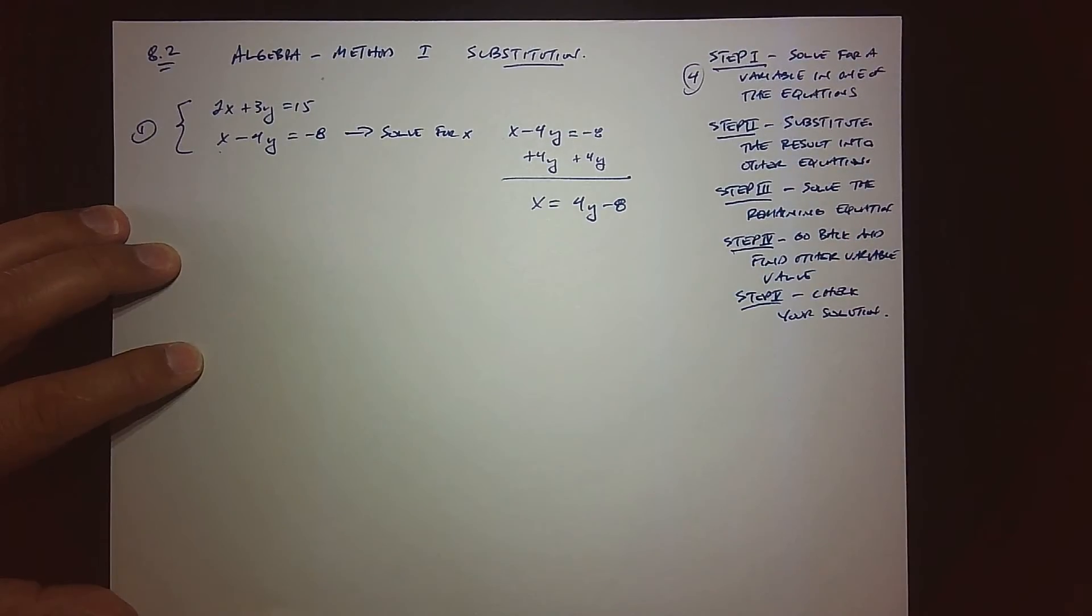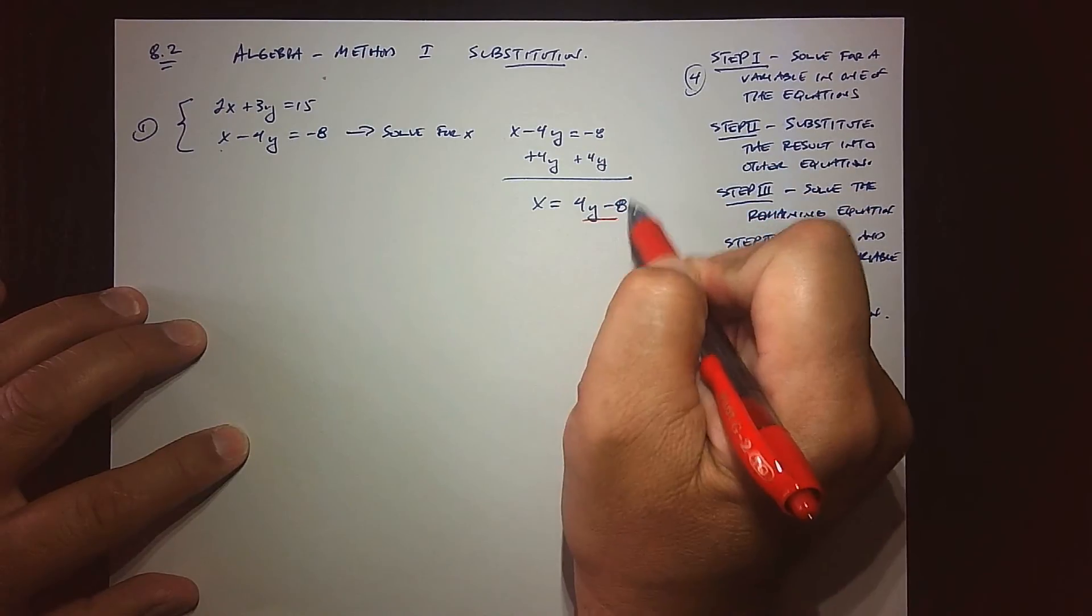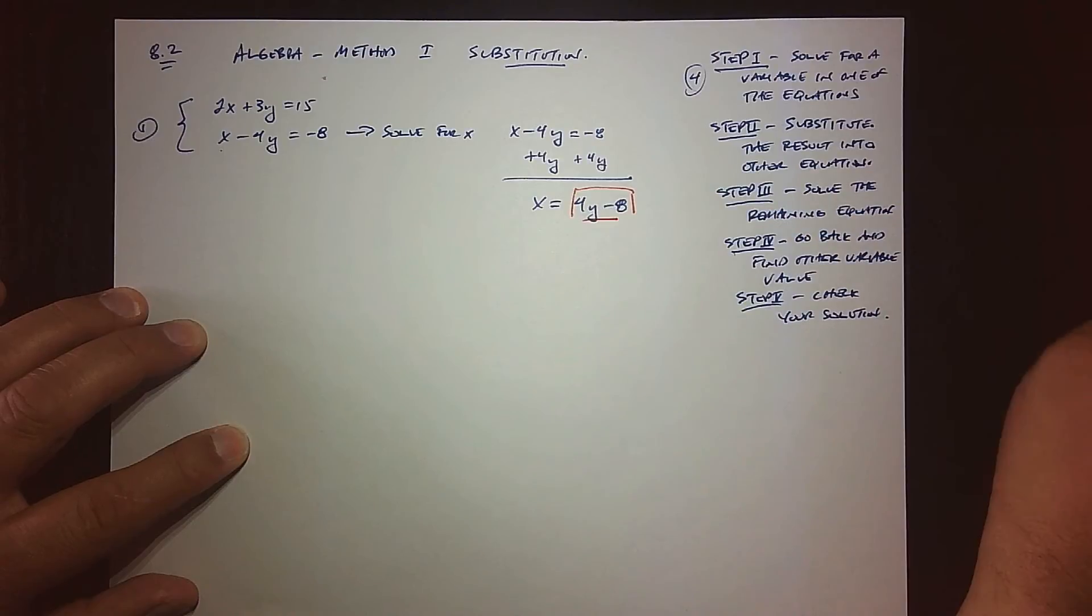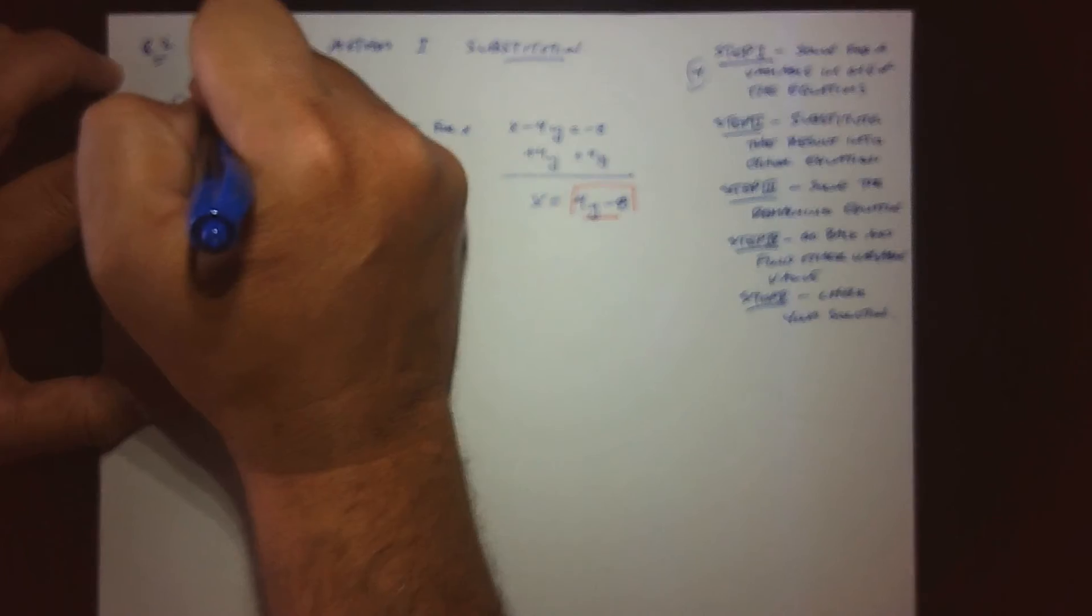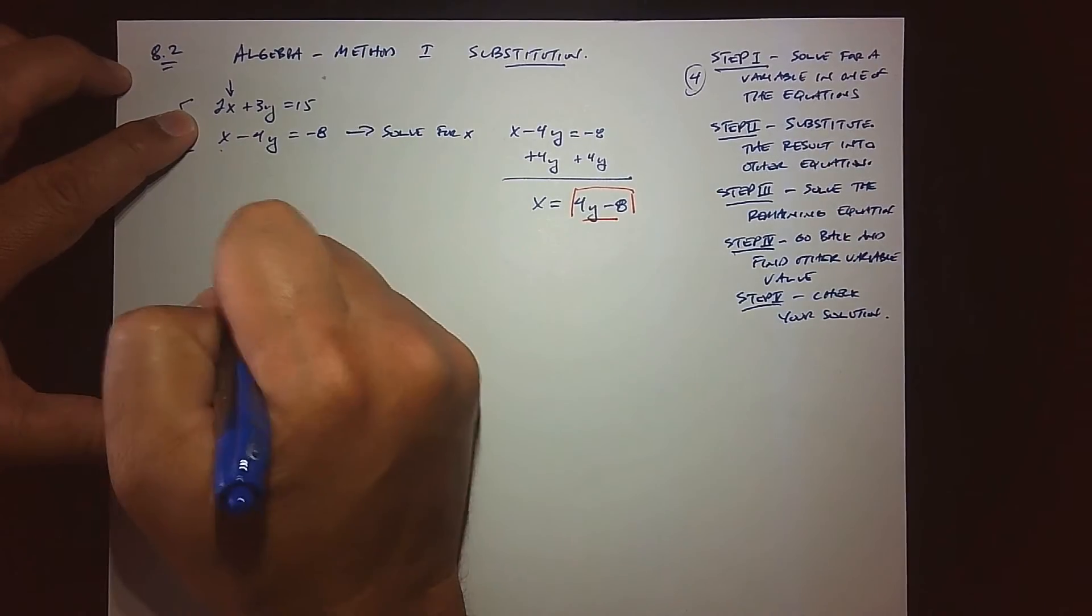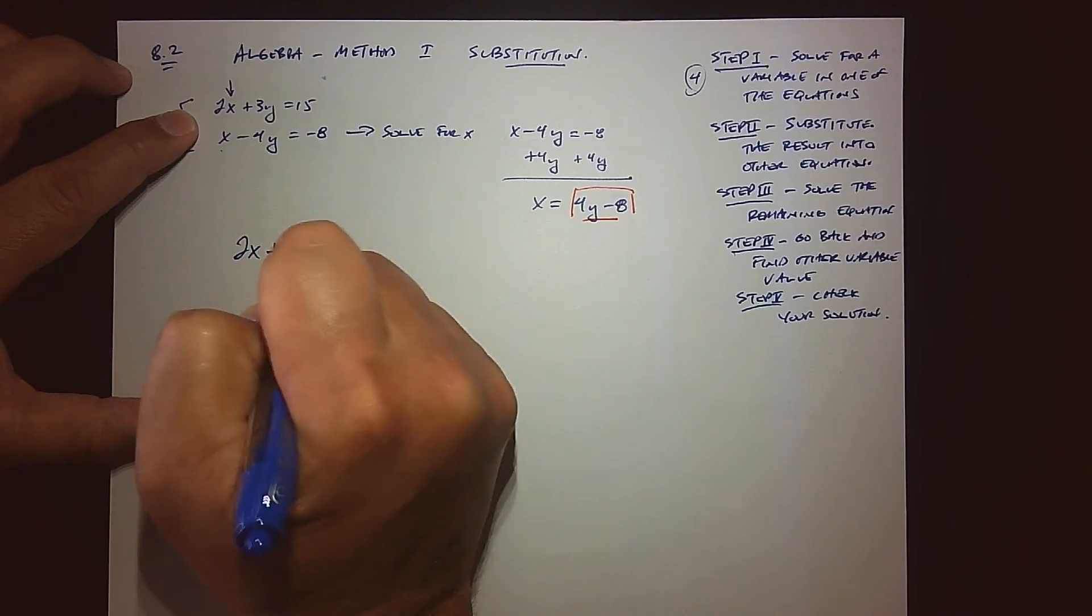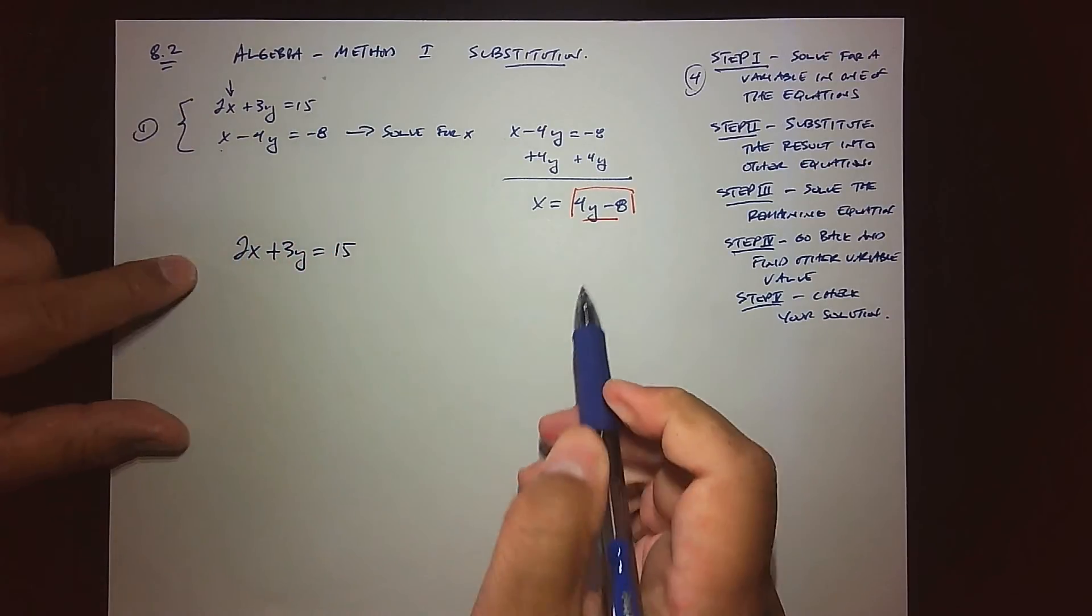I'm claiming that x is equal to 4y minus 8. So I'm going to take what I know x to be and I'm going to come to the other equation, right there. I'm going to come to this equation—don't use the same equation you used, go to the other one.